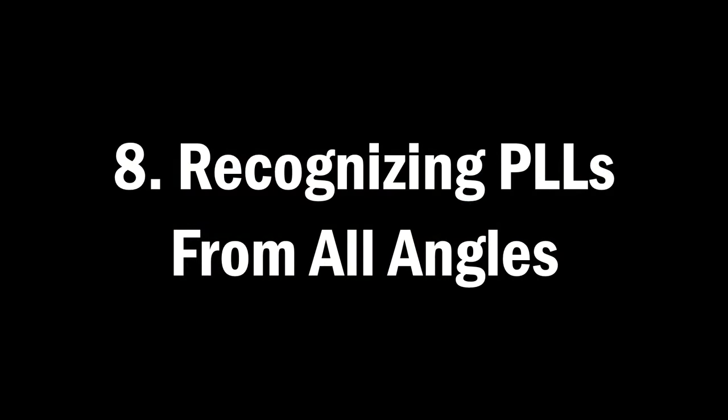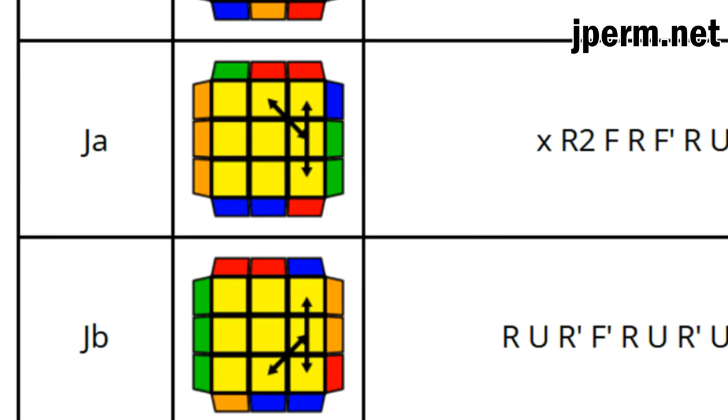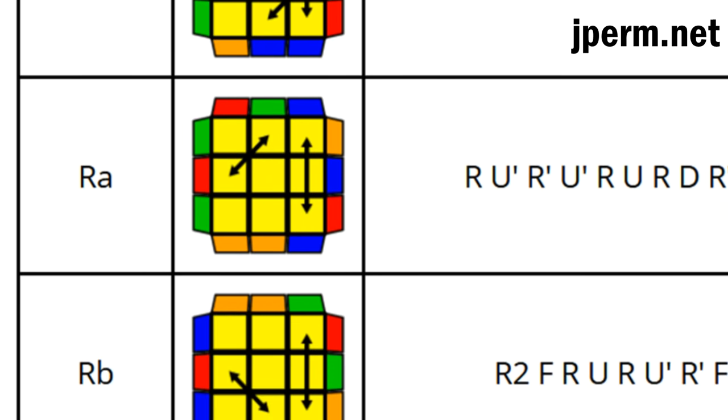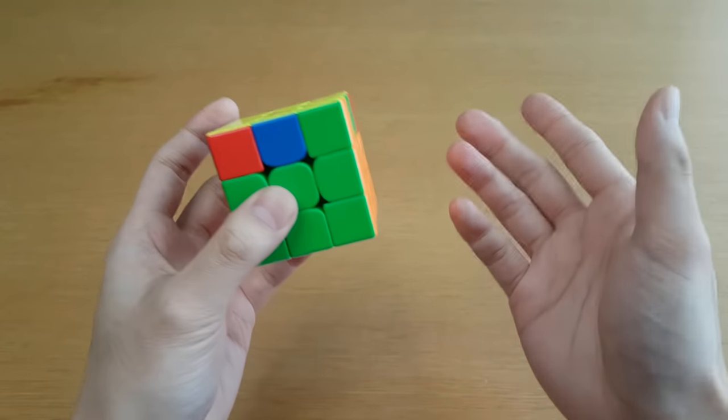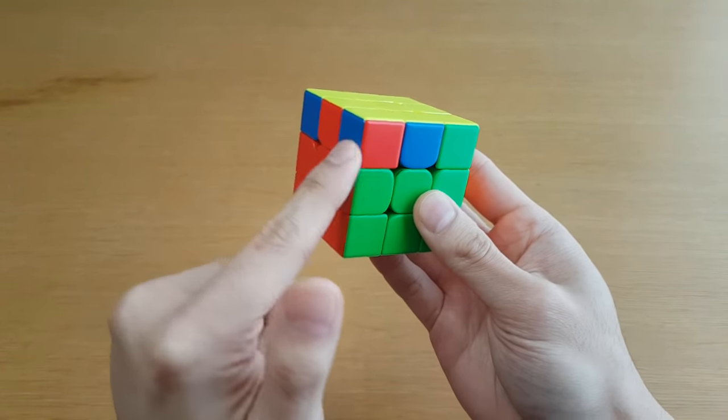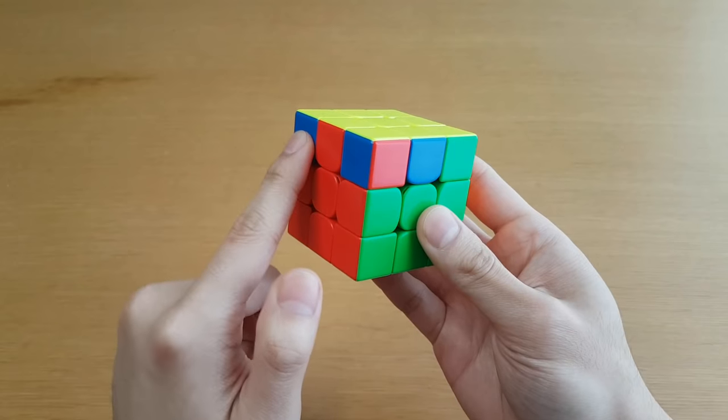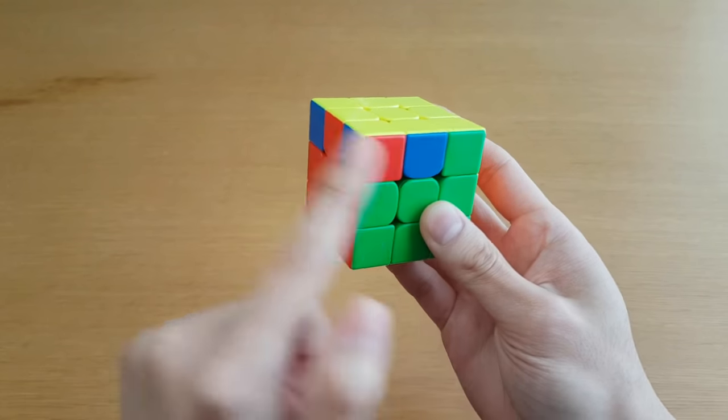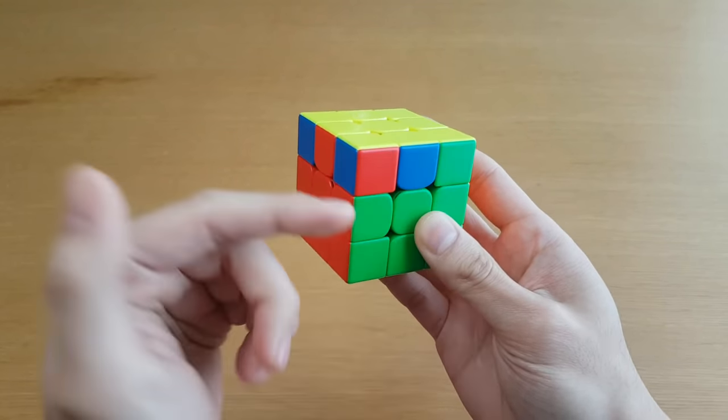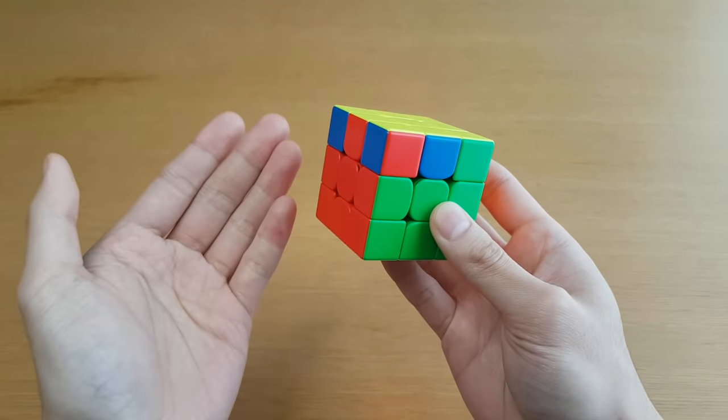Number eight, recognizing PLLs from all angles. When you first learn PLL, you will be looking at the arrow diagrams, but later on you want to recognize from the color patterns that you see on the cube. A lot of people only look at blocks because those are the easiest ones to see, but this is blue, red, blue, red, blue. This is a checker pattern and is just as easy to find if you're looking out for it.